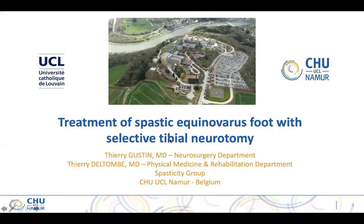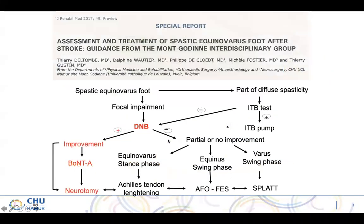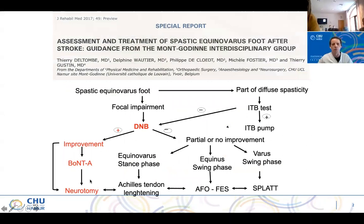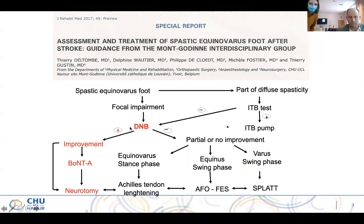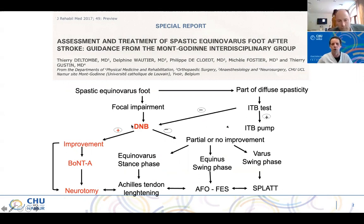I will discuss about the treatment of spastic foot with selective tibial neurotomy. I'm the head of the PM&R department. I do patient selection and recruitment, and Thierry Gustin does surgery, and after that I do follow-up of the patient. Neurotomy is focused on spasticity as a toxin, and it's indicated in case of spastic foot, in case of focal impairment, after improvement obtained by means of diagnostic nerve block. If the diagnostic nerve block doesn't work, it means weakness or shortening, and it's another part of the subject — not really a spasticity treatment which is requested.